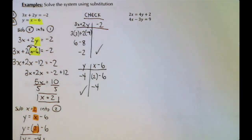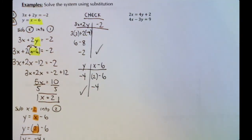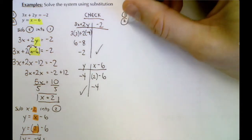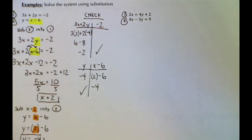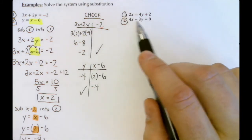We're going to do a second substitution example, and this one is a little trickier because neither of the equations already says x equals or y equals. So we have to change one of the equations to say x equals or y equals by isolating for either variable. We have equation 1 and equation 2 labeled.